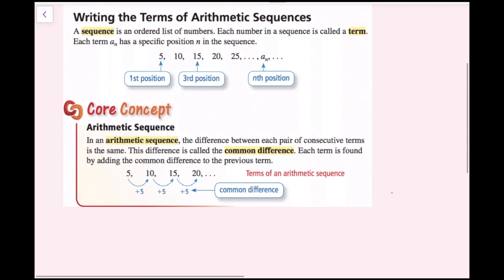Writing the terms of an arithmetic sequence. A sequence is an ordered list of numbers. Each number in the sequence is called a term. Each term, a sub n, has a specific position, n, in the sequence.